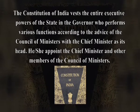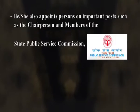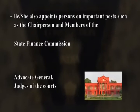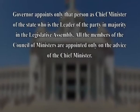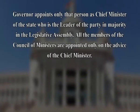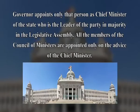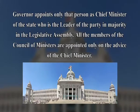The governor appoints the chief minister and other members of the council of ministers. He or she also appoints persons to important posts such as the chairperson and members of the state public service commission, state election commission, state finance commission, and the advocate general, as well as judges of courts other than the high courts. He or she is consulted when the judges of the state high court are appointed by the president, but in practice the governor's powers are only formal. The governor appoints only that person as chief minister who is the leader of the party in majority in the legislative assembly. All members of the council of ministers are appointed only on the advice of the chief minister, and all other executive functions are performed by the governor exactly as per the advice of the council of ministers.